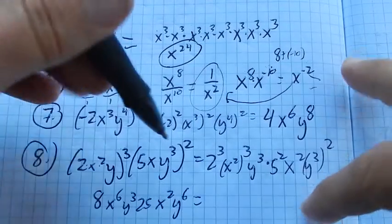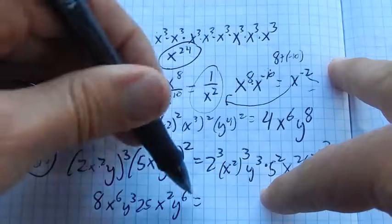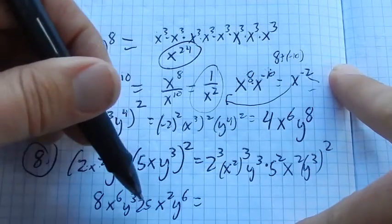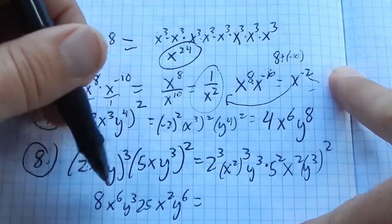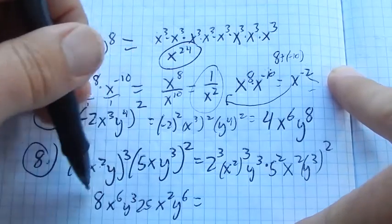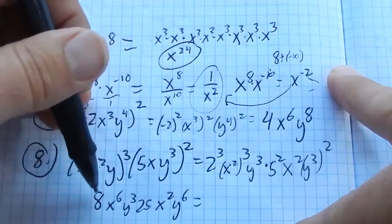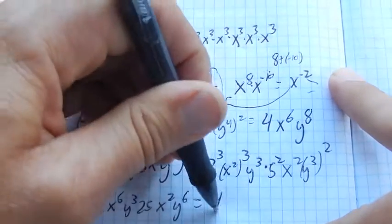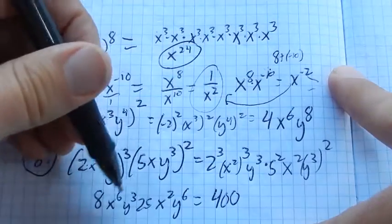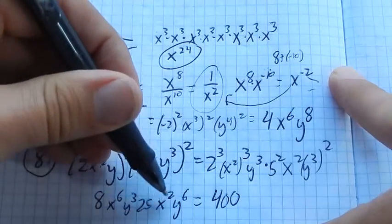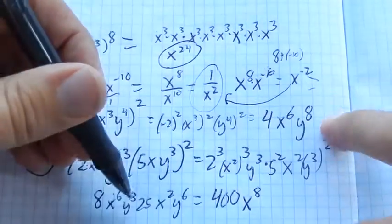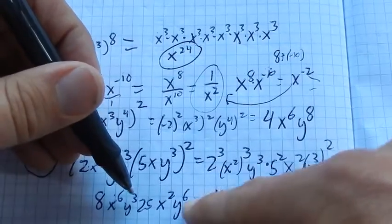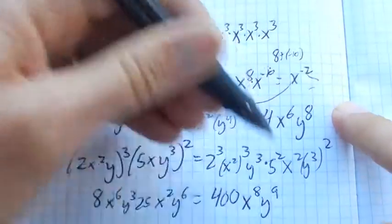And so now what I can do is, all these are multiplied together. So I can multiply it in whatever order I want. So I'm going to multiply together the things that I can kind of combine with multiplication. So 8 times 25, I just think about quarters. That's 8 quarters. So 400 would be like 4 bucks. x to the sixth times x squared. I have 6 of them, 2 more of them. That's 8 of them. y cubed times y to the sixth. 3 of them, 6 more of them. y to the ninth.